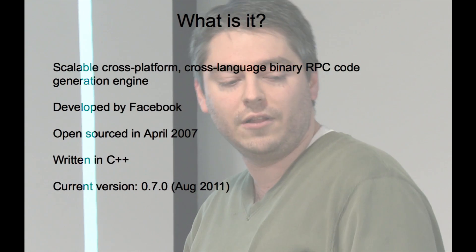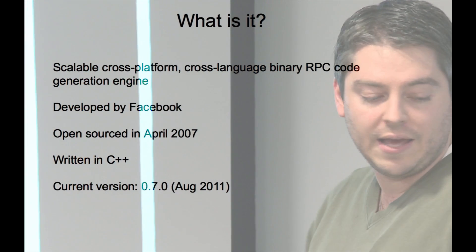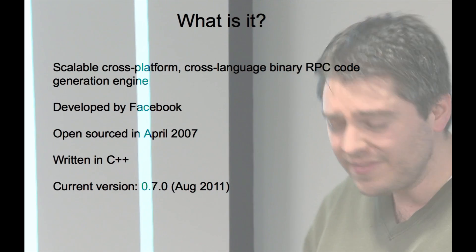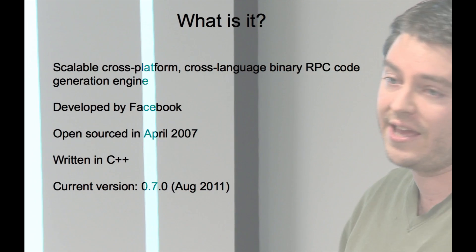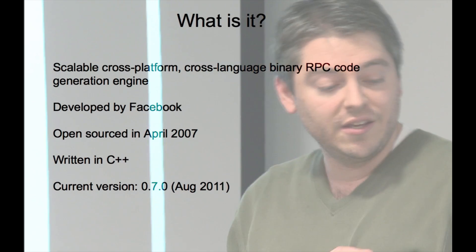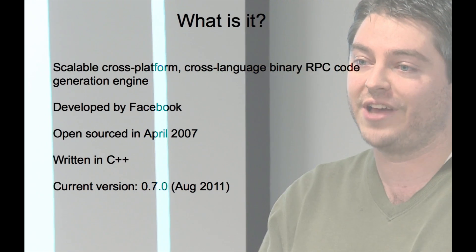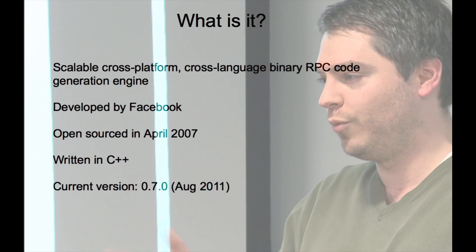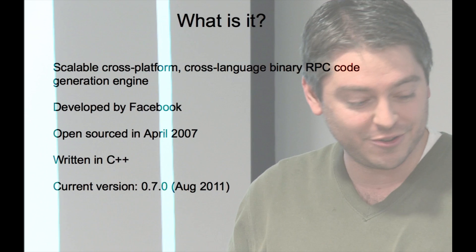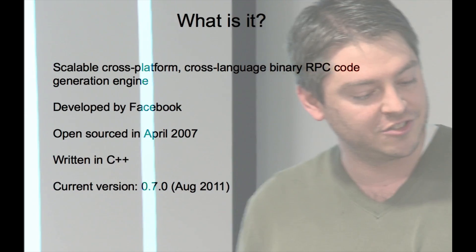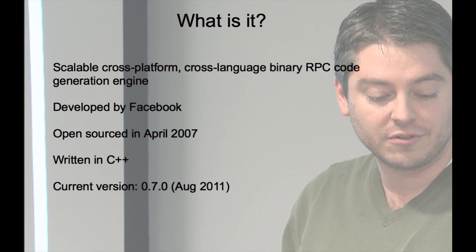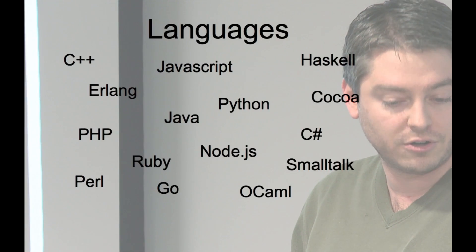This was developed by Facebook and they open sourced it back in 2007. Soon after that it became an Apache incubator project. For all the Java haters and the one Ruby hater out there, it is written in C++, so you can use it without feeling dirty by touching Java. And it is actively developed — the most recent version was just released in August.